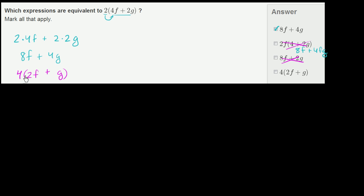Or you could think of it as we undistributed a 4, we factored out a 4. So 4 times 2f plus g is indeed the same thing as 8f plus 4g, which we already know is the same thing as our original expression. And you can distribute this to verify that. So this is also a valid expression.